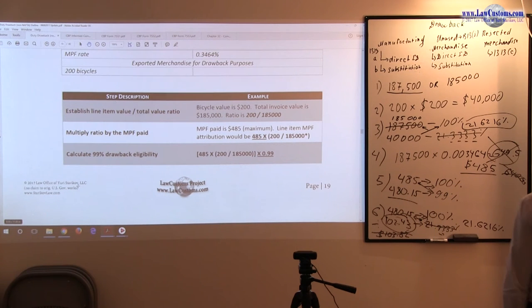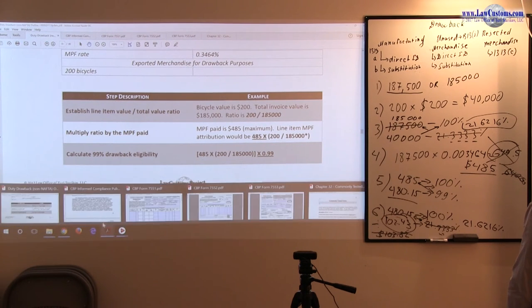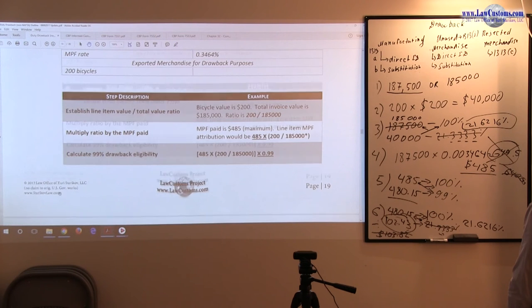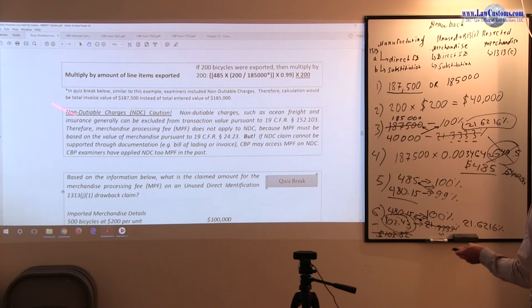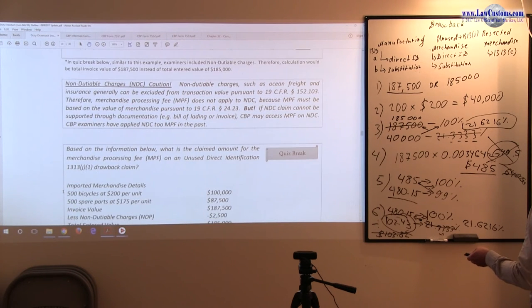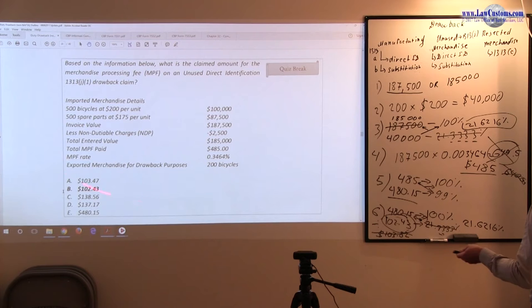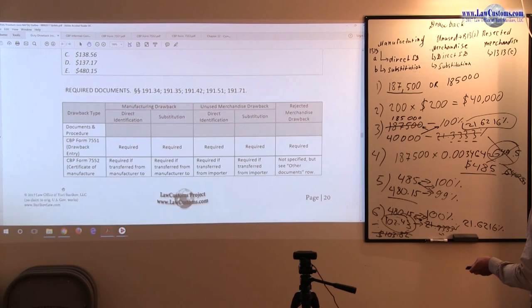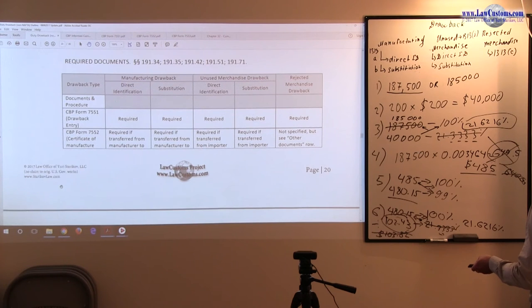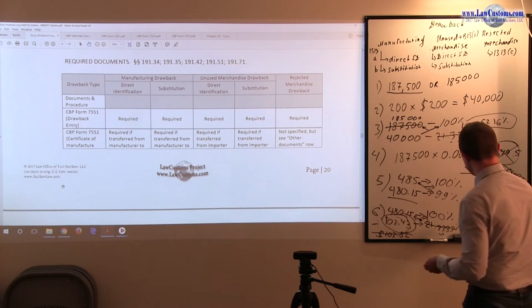So that's about the merchandise processing fee apportionment. If you want to look at more examples, review them over there. Be careful with non-dutiable charges, and because this came up before, as we saw in October 2015 exam question 52, and be mindful of the order of operations.